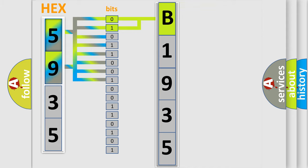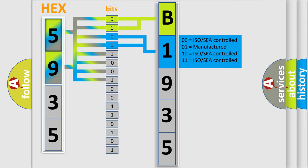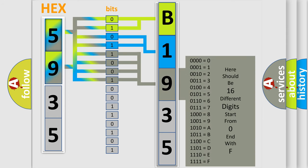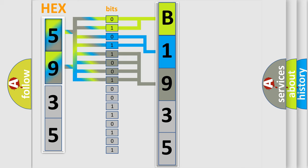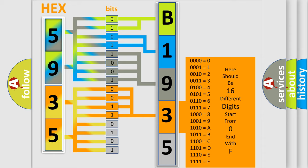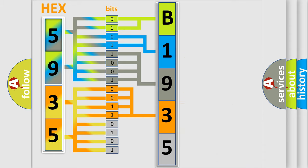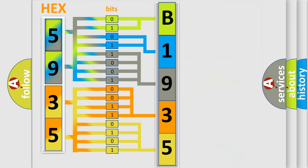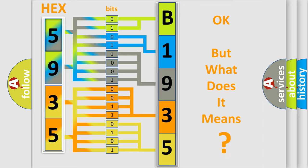The next two bits determine the second character. The last bits of the first byte define the third character of the code. The second byte is composed of a combination of eight bits. The first four bits determine the fourth character of the code, and the combination of the last four bits defines the fifth character. A single byte conceals 256 possible combinations. We now know in what way the diagnostic tool translates the received information into a more comprehensible format. The number itself does not make sense to us if we cannot assign information about what it actually expresses.